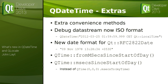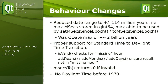QTime has got new get and set methods for milliseconds since the start of the day, instead of having to write that horrible conversion manually — you'd be amazed how often that crops up when you're trying to convert a time. The debug and data stream output is now actually useful — you can tell what type of datetime you have. There's also a new date format for RFC 2822 dates.